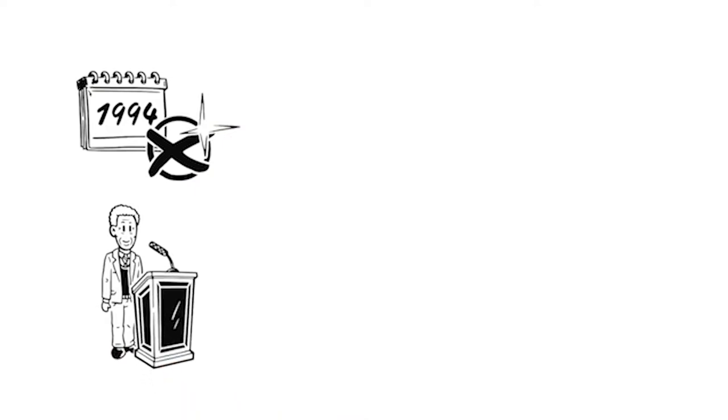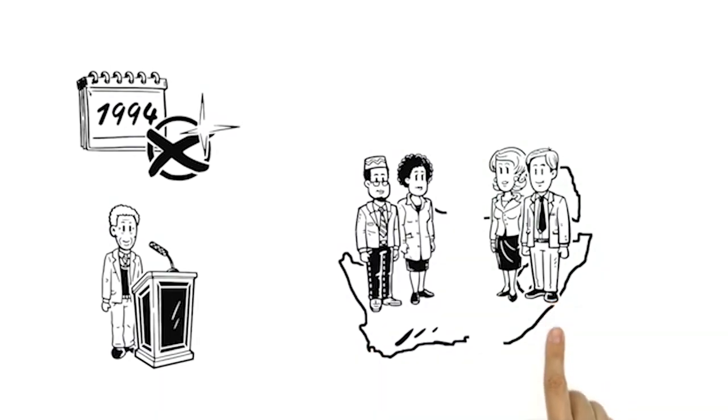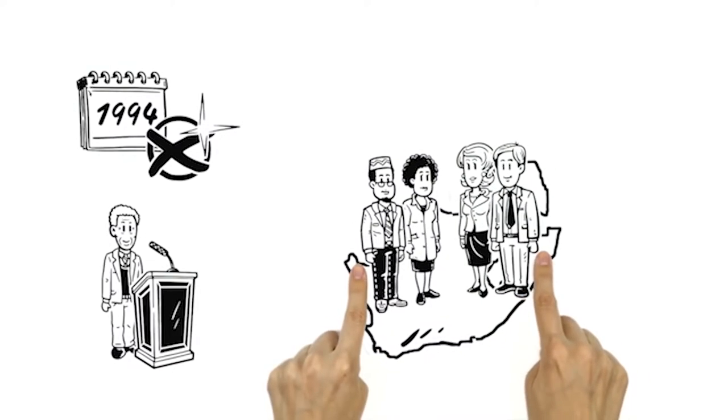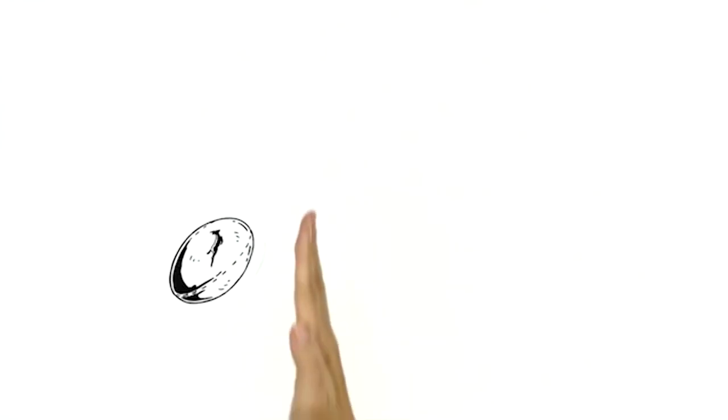Considering himself the president of all South Africans, he united the country that had been divided along racial lines. One of the ways Mandela did this was through sports, such as rugby, which the black population rejected as a sport of apartheid.